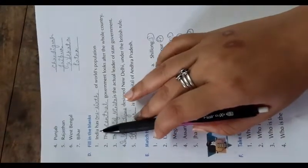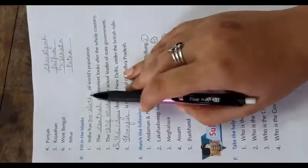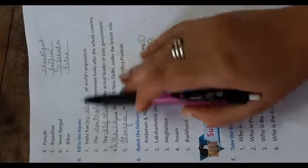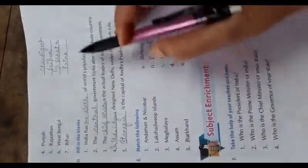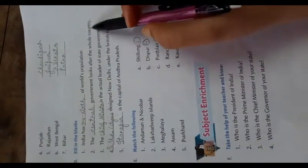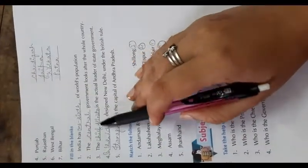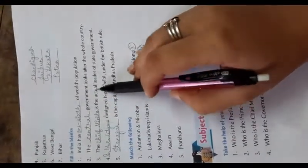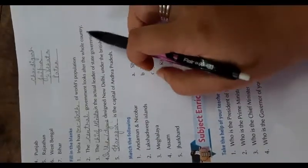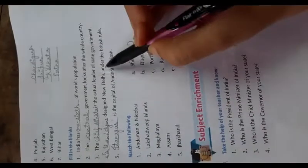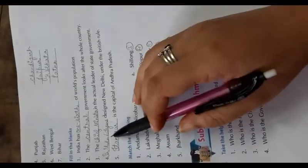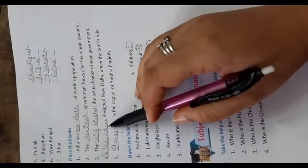Now come to the fillers. The first one is: India has one-sixth of world's population. Second, the central government looks after the whole country. Third one, the Chief Minister is the actual leader of state government. And Sir Edwin Lutyens designed the New Delhi under the British rule.